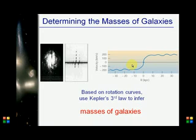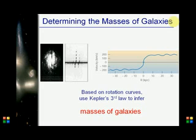Based on the rotation curves, you can get the mass of the galaxy using Kepler's Third Law to infer galaxy masses. There is a relationship — a development of Kepler's Law — between the distance to the center and the period of rotation, and this way you can get the mass.